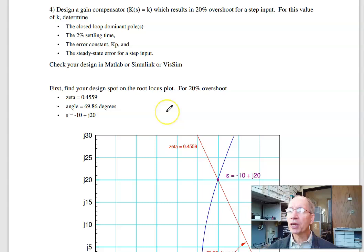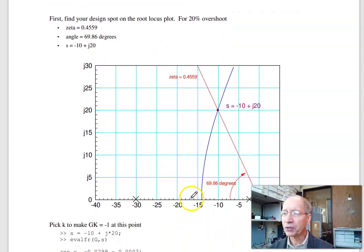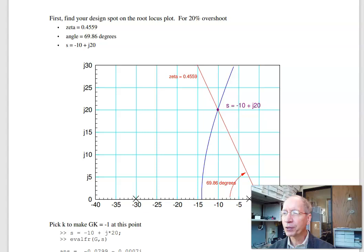Problem 4. Suppose I could tolerate some overshoot. In this case, I can tolerate 20% overshoot. Now design a gain compensator that gives you 20% overshoot in the step response. The trick is to draw the root locus plot. Draw the damping line for 20% overshoot. That's zeta is 0.4559. Angle is 69 degrees. Tangent is 2. So there's your point, minus 10 plus j20.